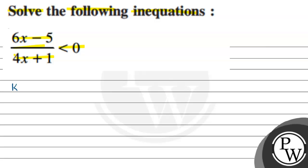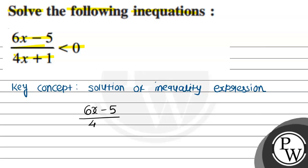First, let's review the key concept. The key concept for this question is the solution of inequality expressions. Now consider the given expression, that is 6x minus 5 divided by 4x plus 1 less than 0.